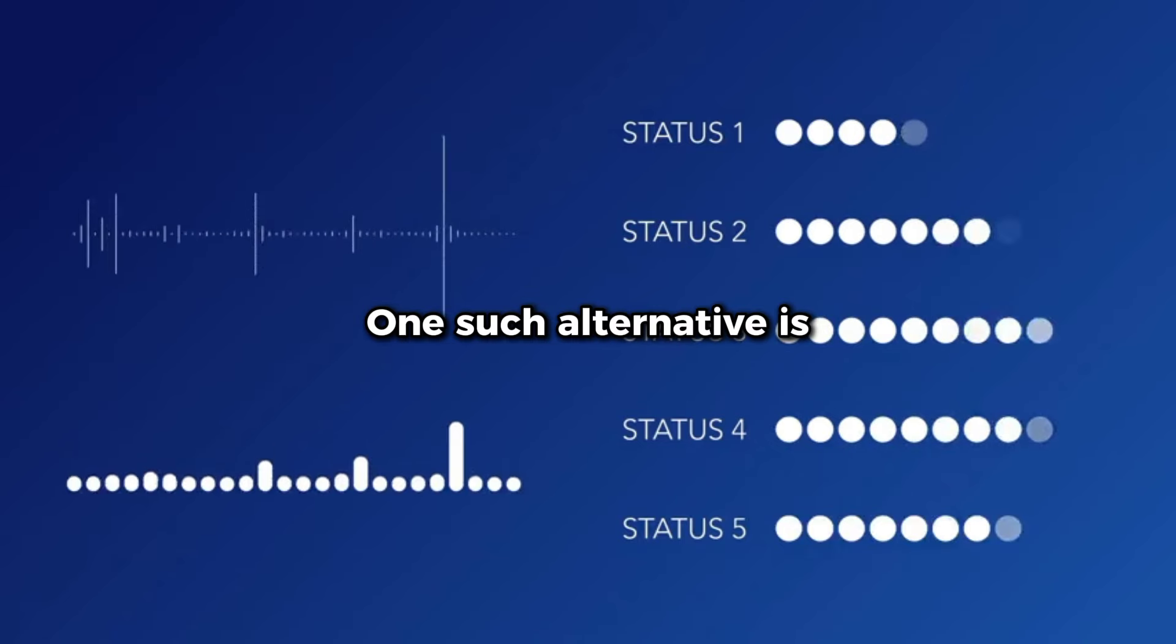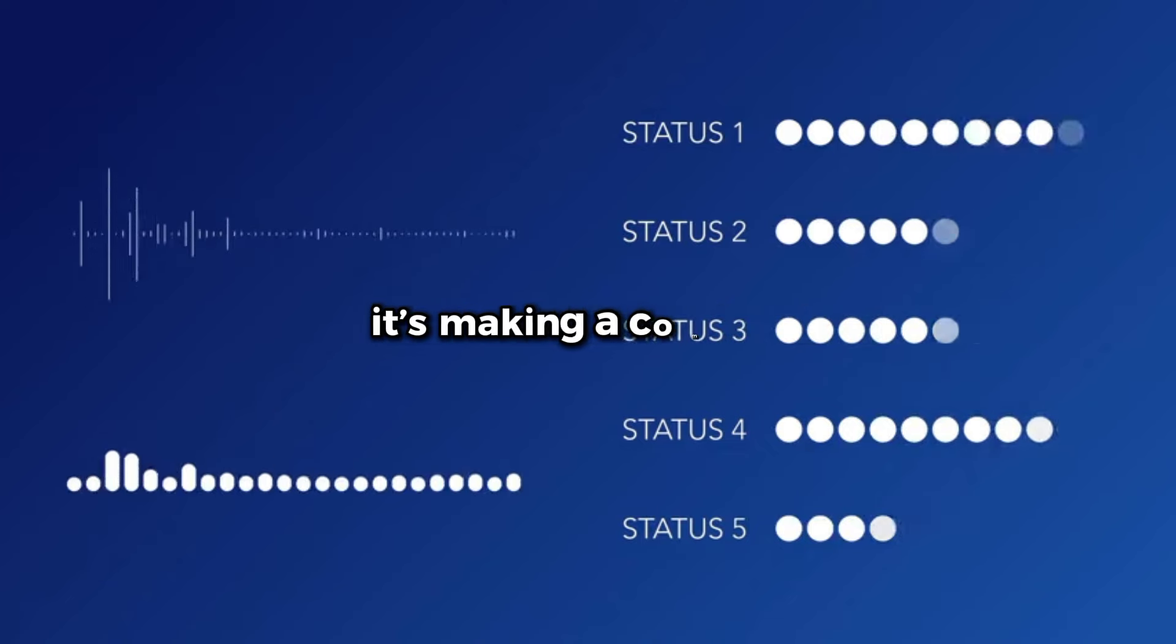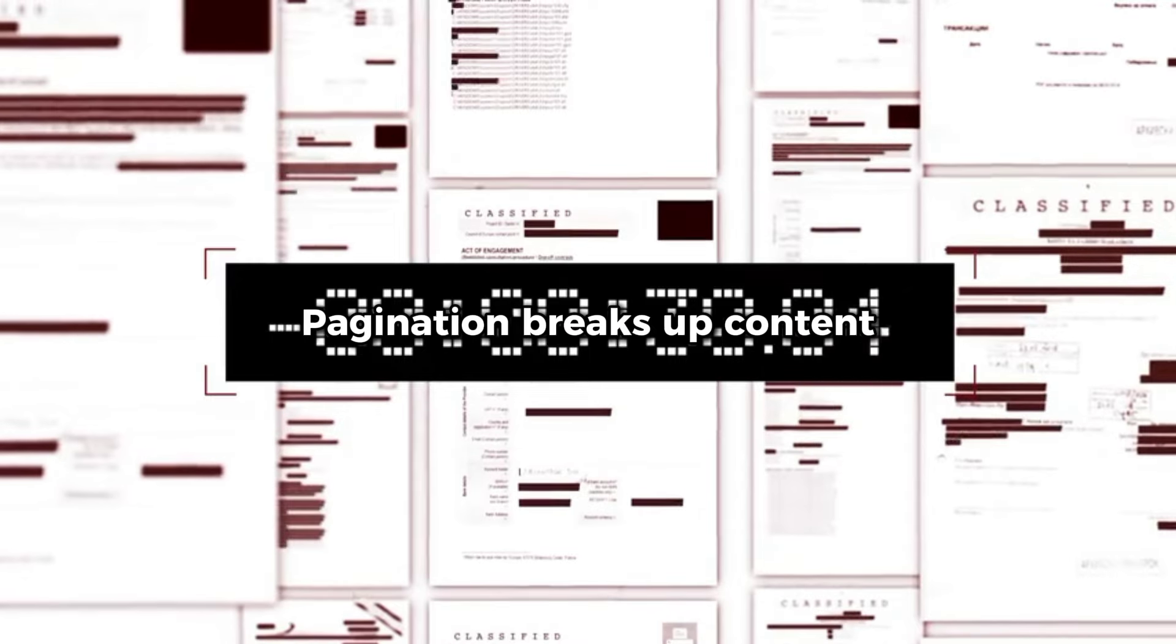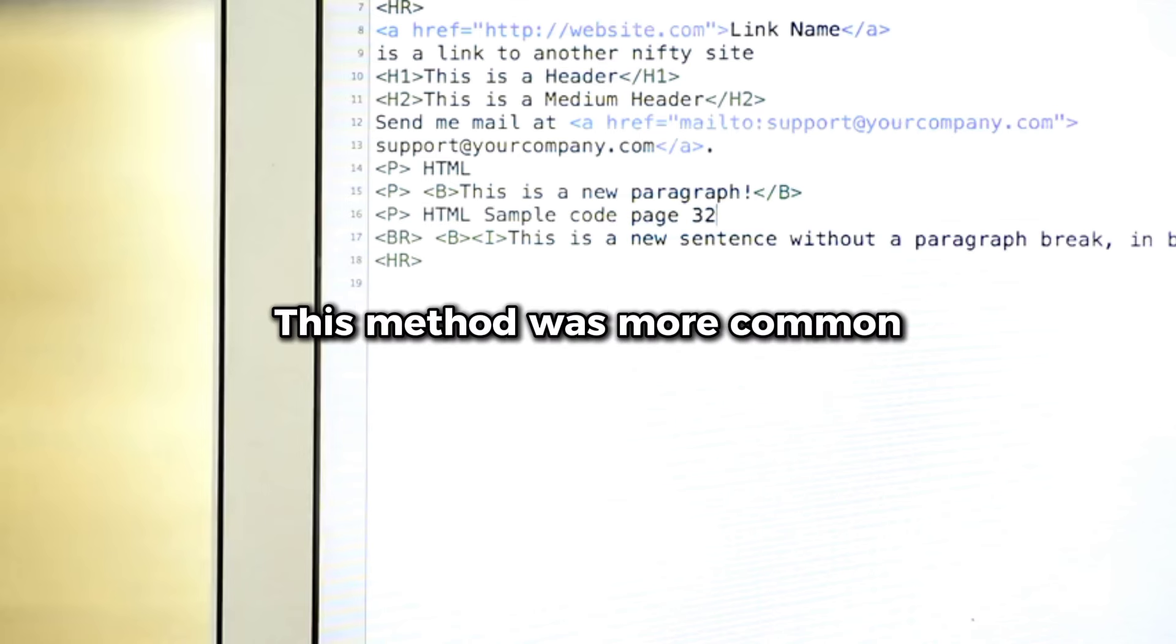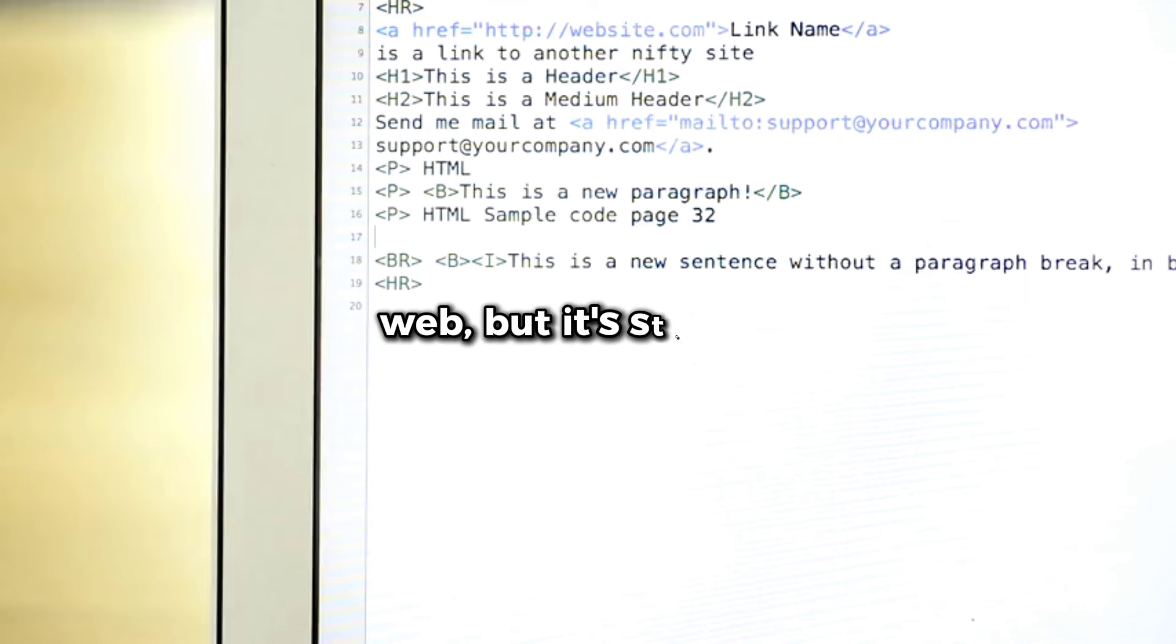One such alternative is called pagination, and it's making a comeback. Pagination breaks up content into discrete pages, giving users clear stopping points and a sense of control over their browsing. This method was more common in the early days of the web, but it's starting to re-emerge as a solution to the problems caused by infinite scroll.